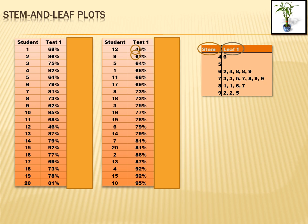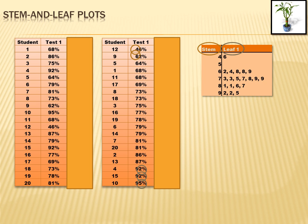Now for the leaf — where does that come from? Under the stem 4, I had one score: a 46. So 6 is the second digit of 46, and I put the 6 there. Looking at the 90s, I had a 92, so I put a 2 next to the 9. Another 92, so another 2. Then a 95, so I put a 5. In the 60s I had a 62, a 64, a 68, another 68, and a 69, and so forth. Now I've got my complete stem and leaf plot for test 1.